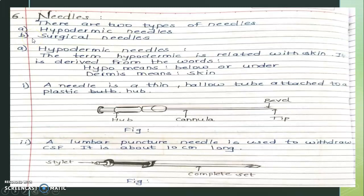Next are the needles. There are two types of needles: hypodermic needles and surgical needles. Regarding hypodermic needles, the term 'hypodermic' relates to the skin — it is derived from the words 'hypo' meaning below or under, and 'dermis' meaning skin, so hypodermic means below the skin. A needle is a thin hollow tube attached to a plastic hub, and it has a single hollow channel called a cannula.